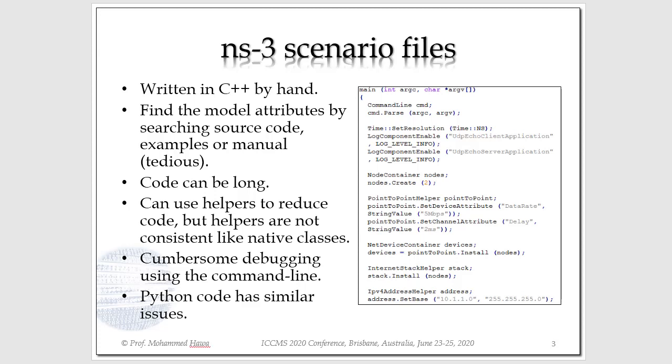Currently, to work with NS3, you have to write NS3 scenario files by hand in C++ or Python. You have to describe your network topology and scenario by hand. Notice here, for example, you say you want two nodes in your simulation, describe what channel you want, and what attributes you want to assign to this channel. However, working with this type of scripting structure is a bit challenging because you need to know those attributes for every model that you're working with. And to find this, if you're not extremely familiar with NS3, you have to dig into a lot of source code or search a lot of pages in the manual.